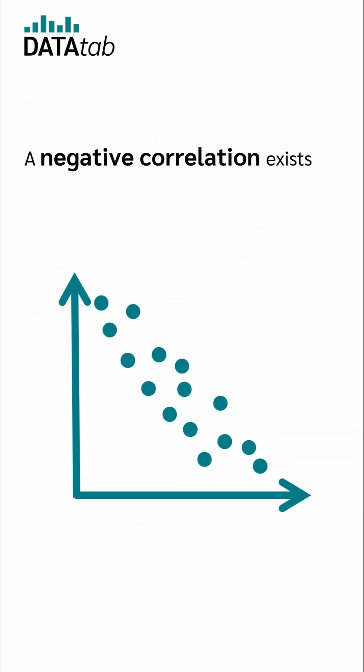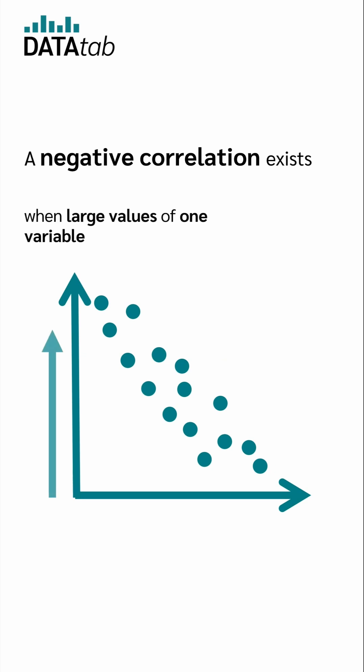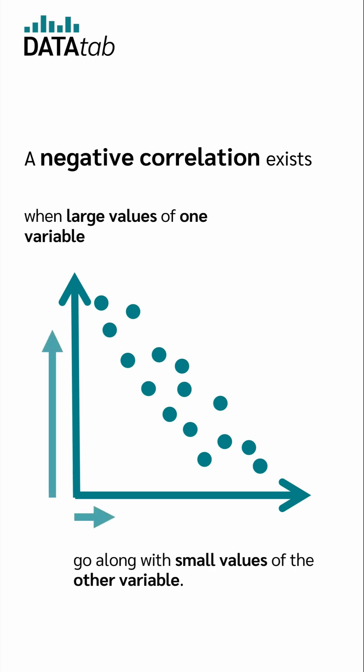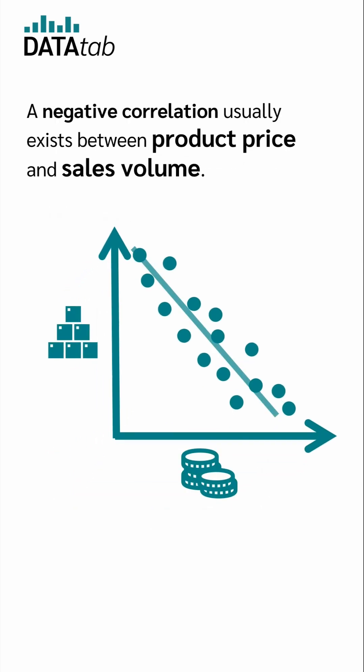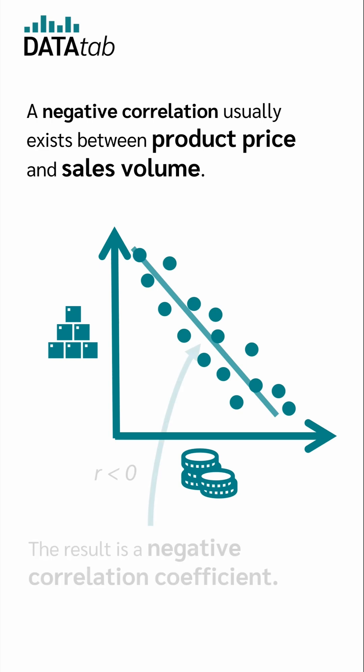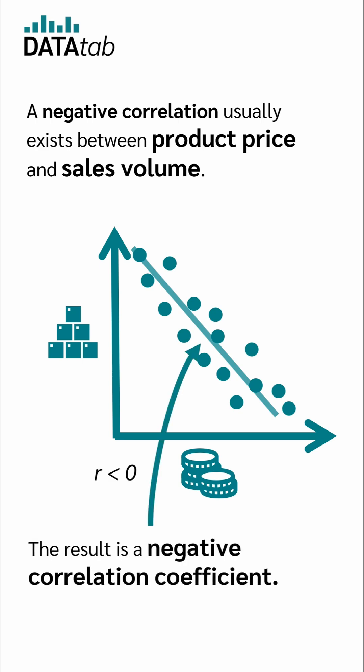A negative correlation exists when large values of one variable go along with small values of the other variable, and vice versa. A negative correlation usually exists between product price and sales volume. The result is a negative correlation coefficient.